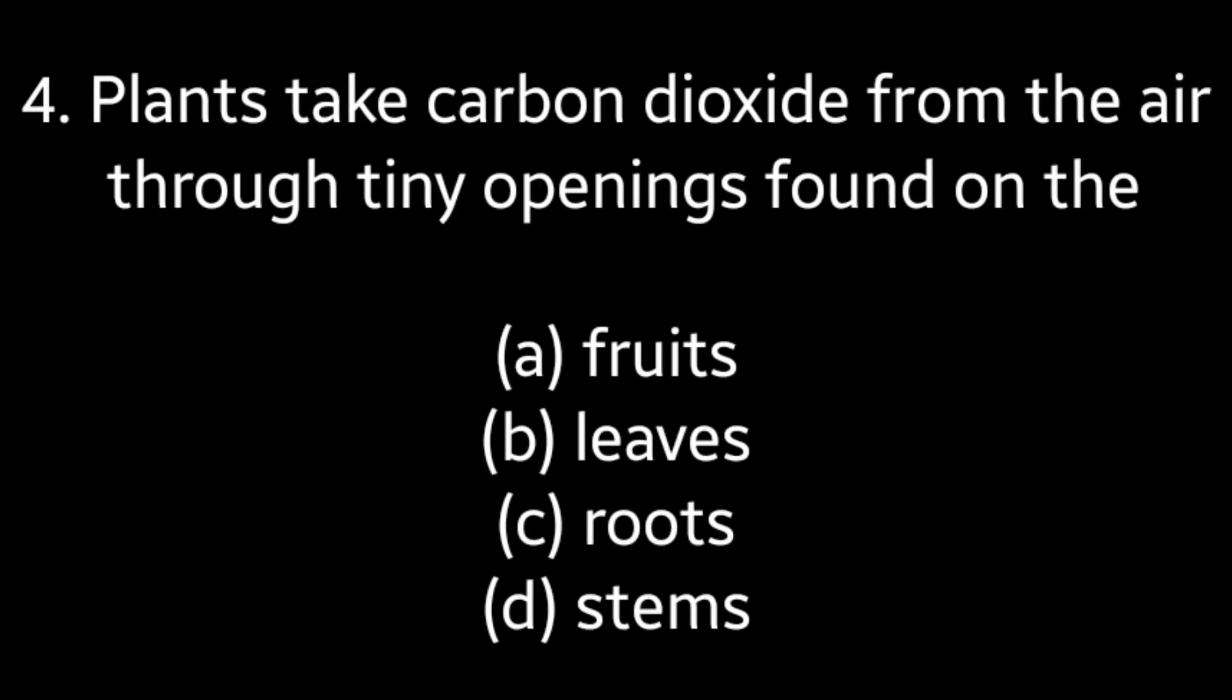Question number 4: Plants take carbon dioxide from the air through tiny openings found on the fruits, leaves, roots, or stems. Answer is option B, Leaves.